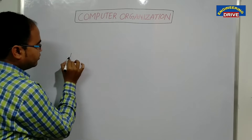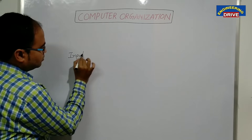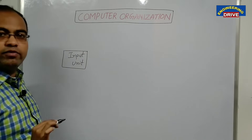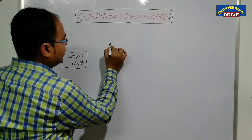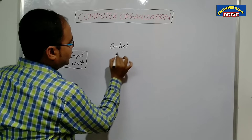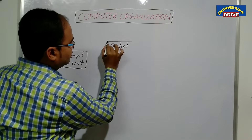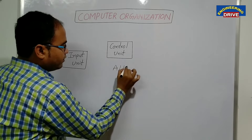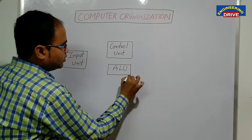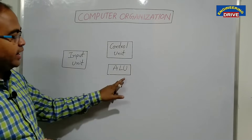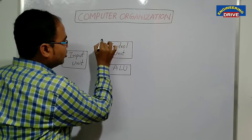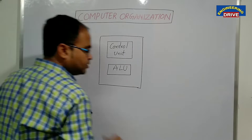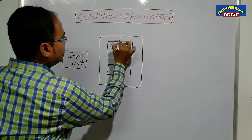The block diagram consists of: first, there is one input unit. In the middle, we have one control unit. Just below this control unit, we have one very important part — that is the ALU, which is the arithmetic and logic unit. These two combined together — control unit and ALU — we call it the central processing unit, or CPU.